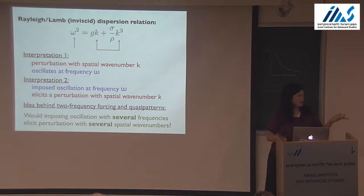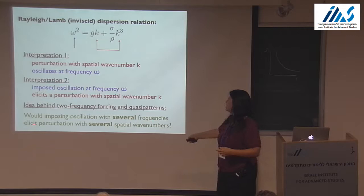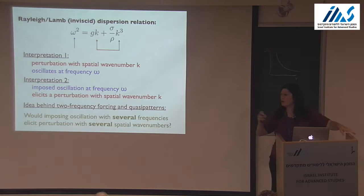If you have an oscillation with several different frequencies, that elicits perturbations with several spatial wave numbers. I don't know who thought of that — was it Edwards, or was it Fauve? I think it must have been Fauve — he had experience with it — but they thought of it and they did it.